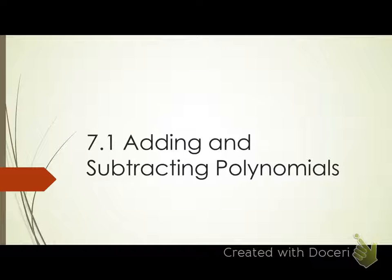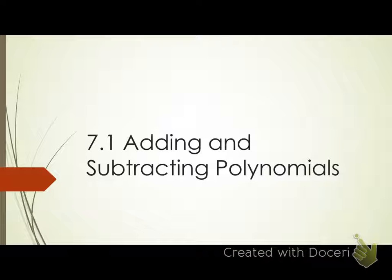We're moving on to chapter 7, section 1. This will be the last chapter we cover in Algebra 1. There are 9 chapters in the book, but we won't be able to cover 8 and 9. We do need to get chapter 7 in for your future math classes. So 7.1 is adding and subtracting polynomials.